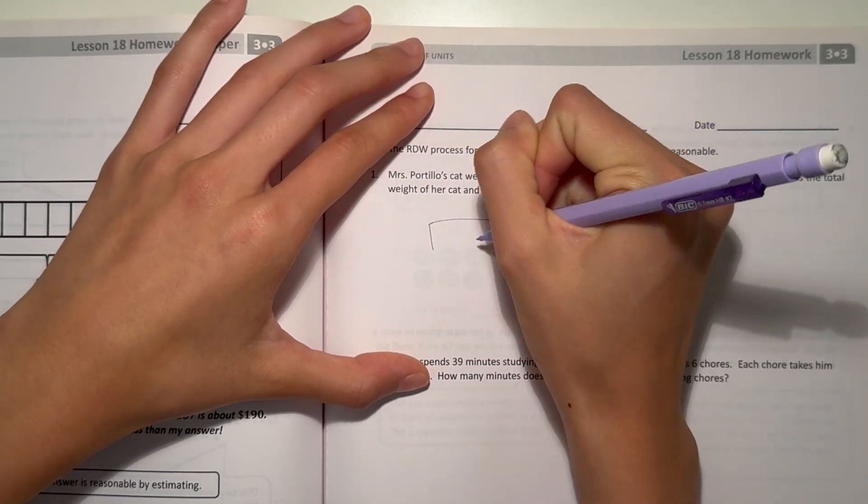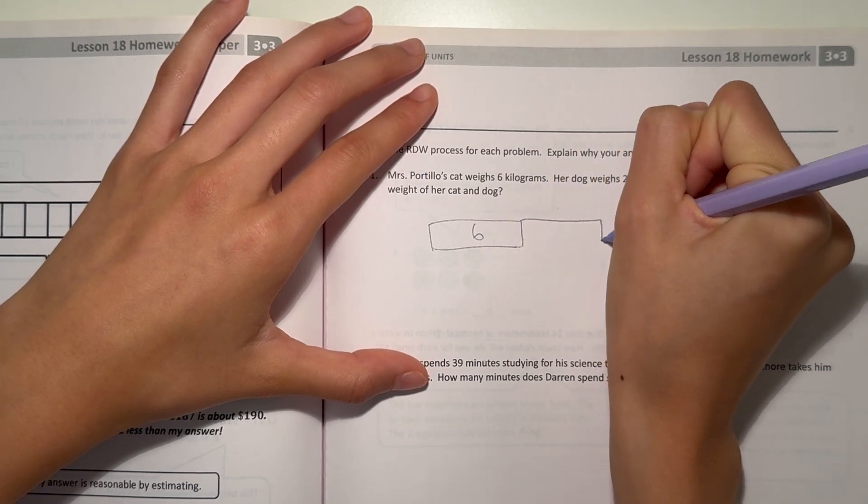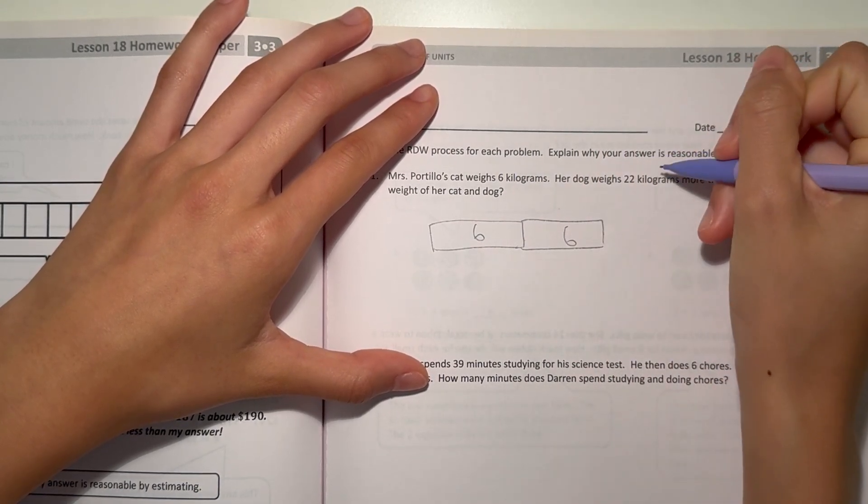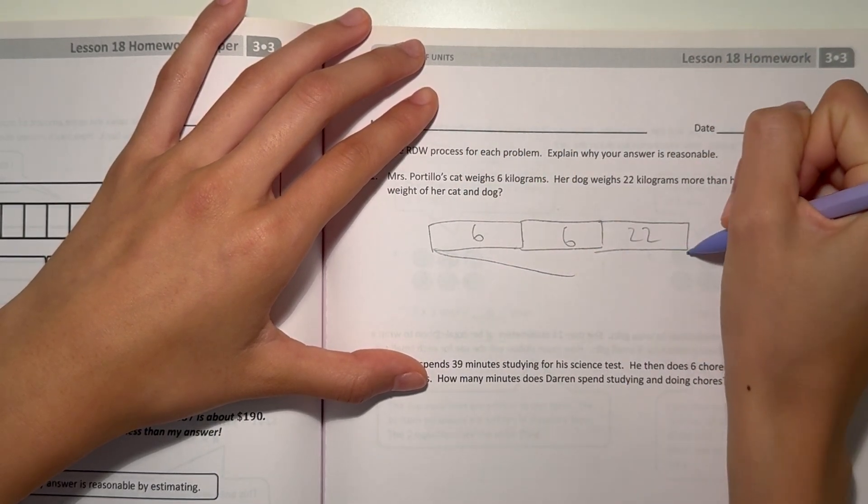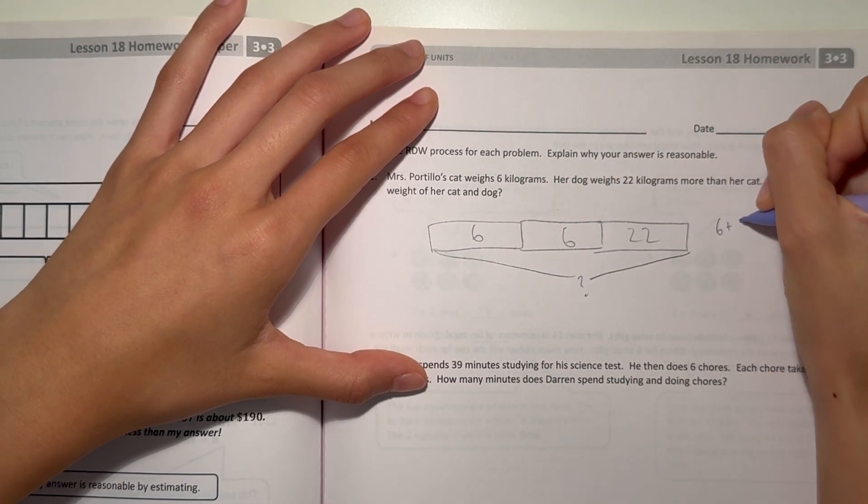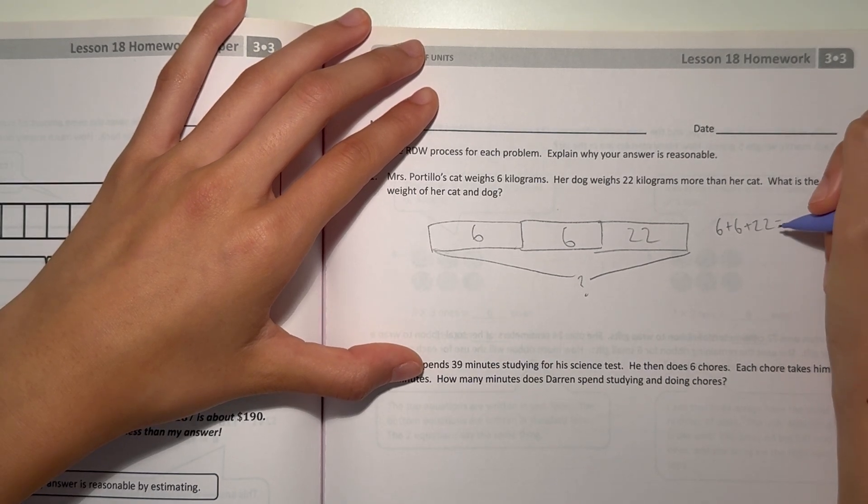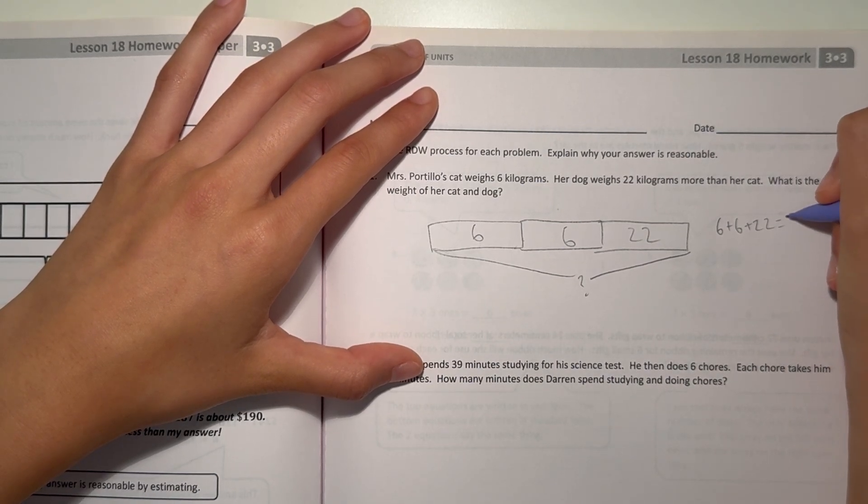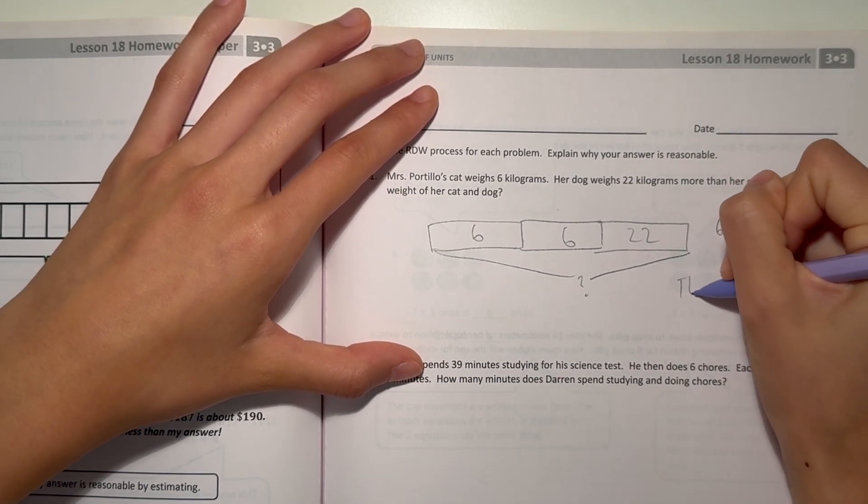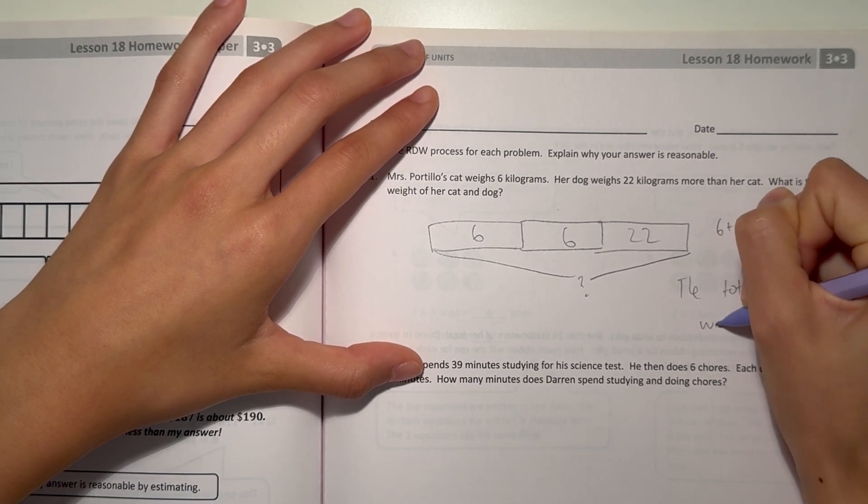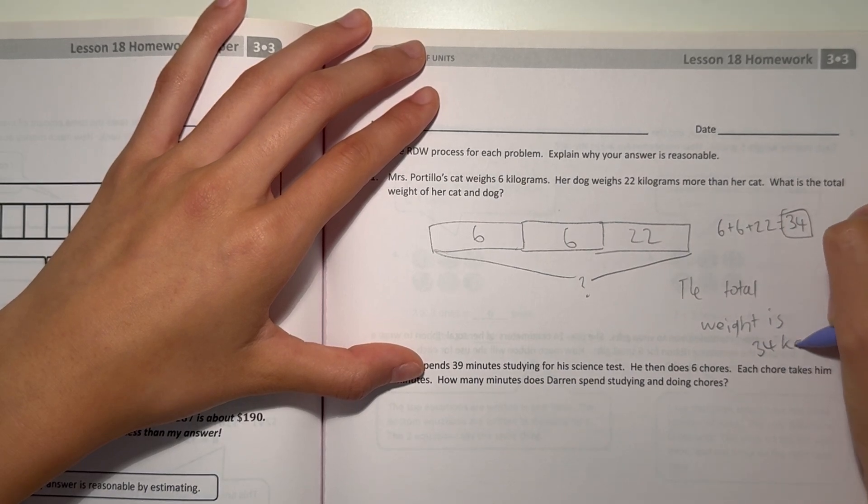Let's start. Her cat weighs 6 kilograms. So her dog weighs more. Her dog has to weigh at least 6 kilograms, but then weighs 22 kilograms more. So then we want to find out what's the total weight. 6 plus 6 plus 22. 6 plus 6 is 12, plus 22 would be 34. So then, the total weight is 34 kilograms.